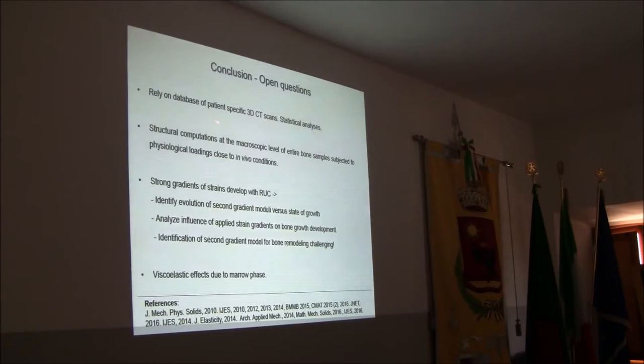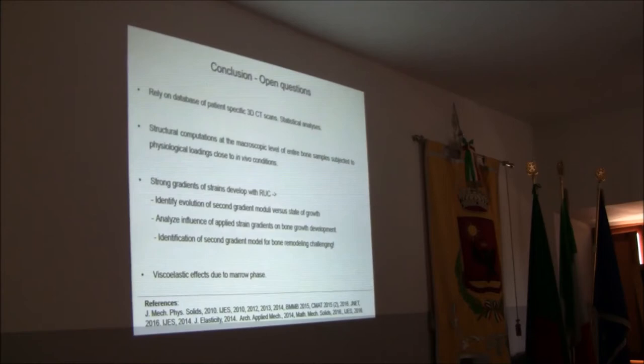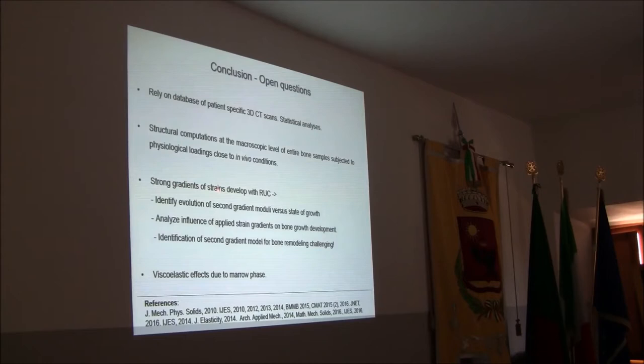In conclusion, it is quite interesting to have a database of images from specific patients. A lot of work remains, especially regarding statistical analysis from this morning's lectures — classifying growth models and integrating patient state. One aspect under investigation is incorporating second-gradient effects into the growth model, because there are strong strain gradients within the RUC. It is quite challenging to identify a second-gradient model in this specific case of bone remodeling. We also plan to introduce viscoelastic effects due to the marrow phase. Thanks for your attention and patience.